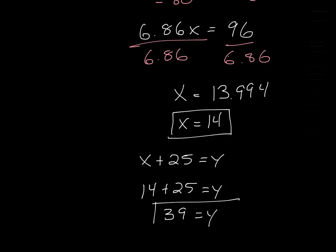And so we've solved for both variables. At the end of the question, we just consider what they're asking. This 14 represents the number of pounds we'd use of the chocolate, and the 39 represents the final amount of the mixture.